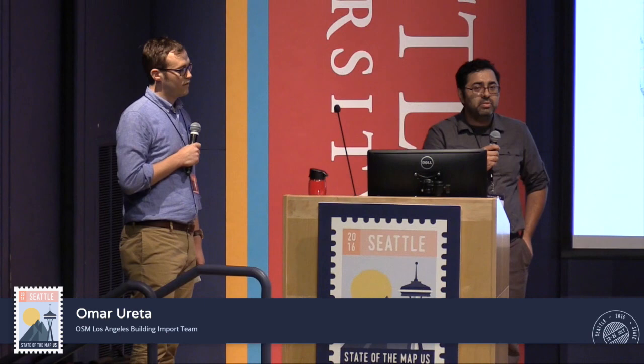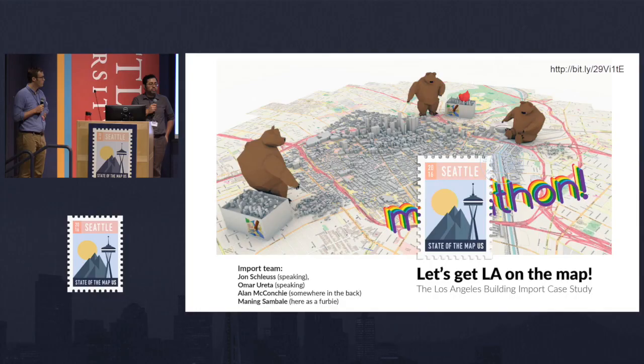My name is Omar Uretta. I am an urban designer. I work for an architecture firm. At our office, we actually use OpenStreetMap data to do site analysis and build contextual 3D models in our work. On the side, I'm also an organizer for the Los Angeles chapter of MapTime. And we kind of just make maps and have fun.